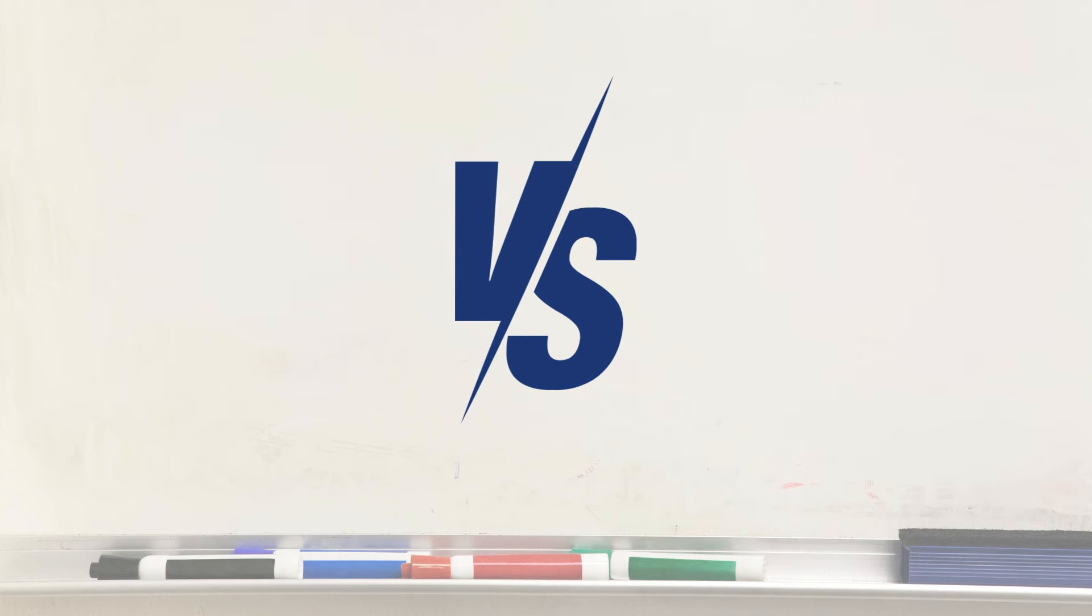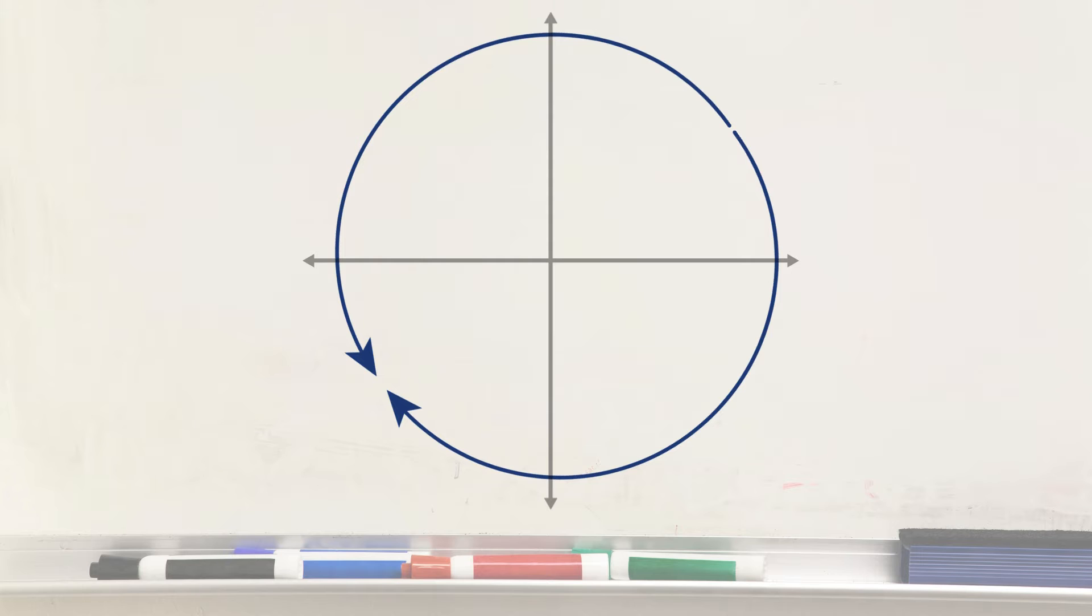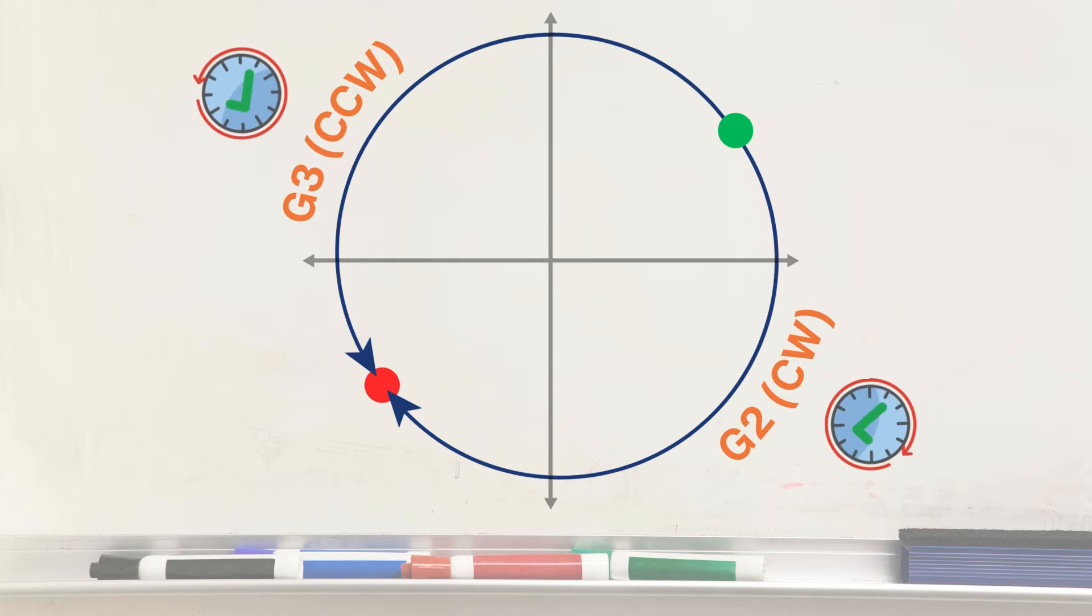So, what is the difference between G2 and G3? With both commands, the machine will move from its current position to the same target coordinate. In G2, the movement will be clockwise, and in G3, it will be counterclockwise.